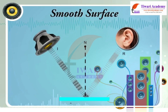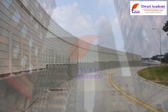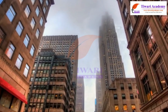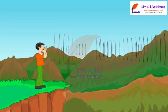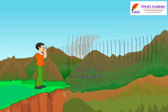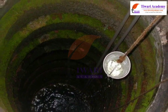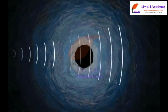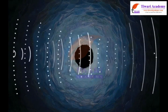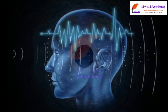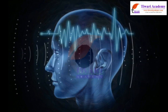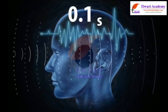Sound waves can be reflected by large, hard, smooth, vertical, and faraway surfaces — for example, walls, buildings, and cliffs. An echo is a reflection of sound arriving at the listener sometime after the direct sound. A typical example is the echo produced by the bottom of a well. Echoes are produced by reflections of sounds. The sensation of sound persists in our brain for about 0.1 second. To hear a distinct echo, the time interval between the original sound and the reflected one must be at least 0.1 second.